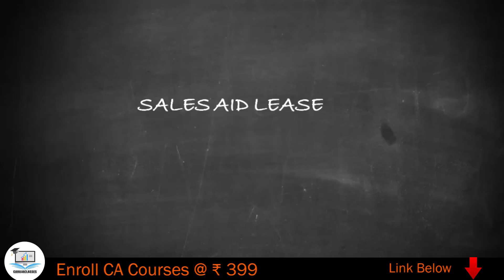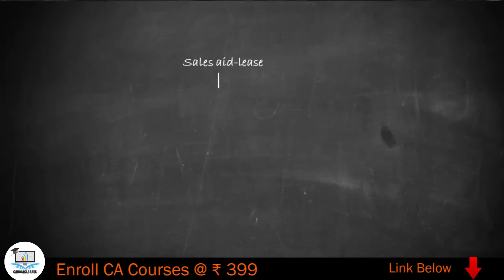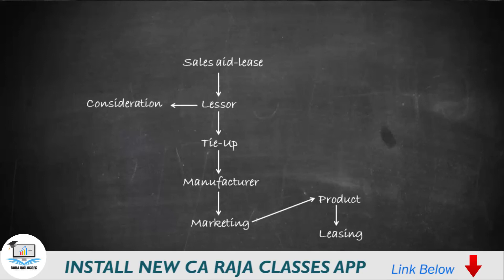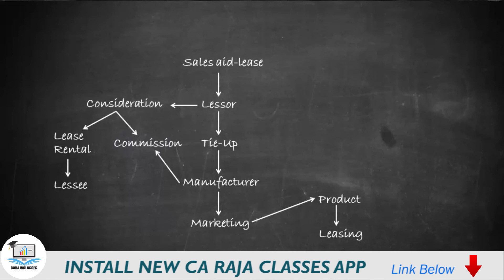The third type of lease is the sales aid lease. In this kind of lease, the lessor will have a tie-up with a manufacturer for marketing the manufacturer's product through leasing. The lessor's remuneration includes a commission from the manufacturer, and apart from that he will also receive lease rentals from the lessee.